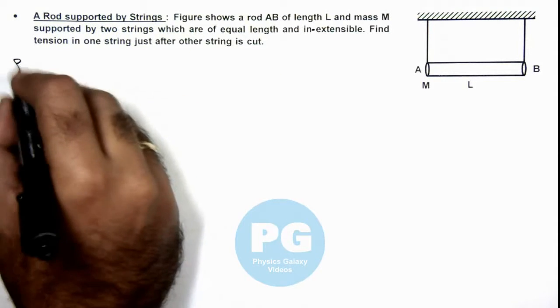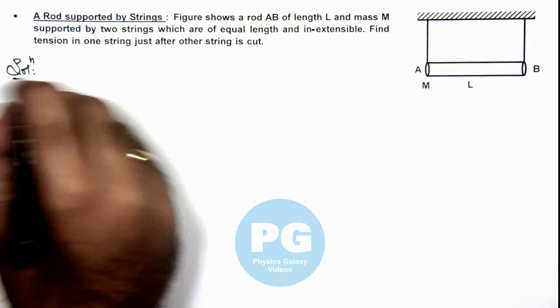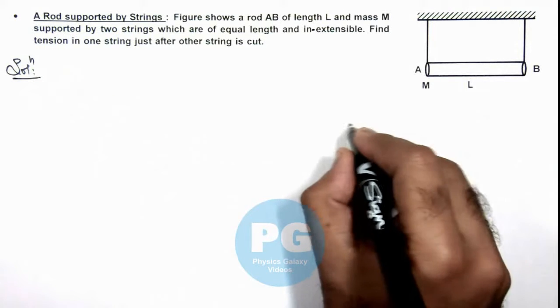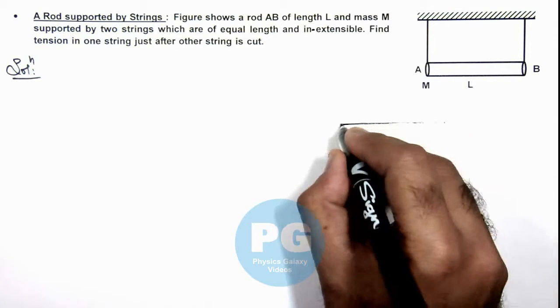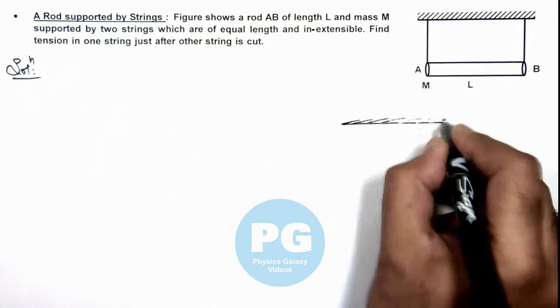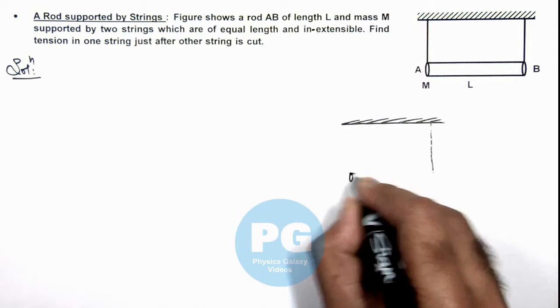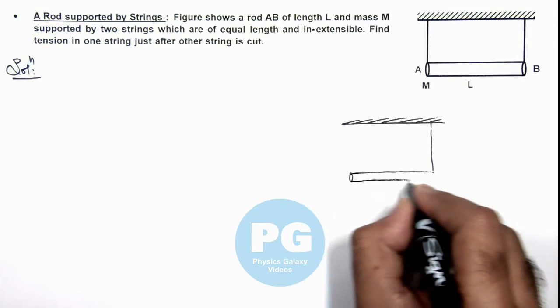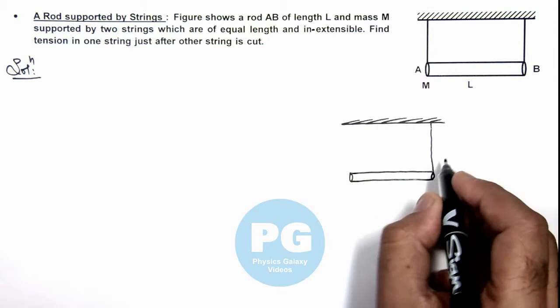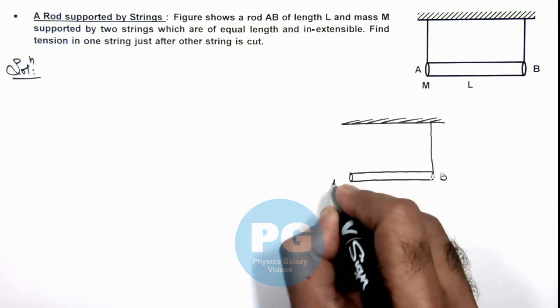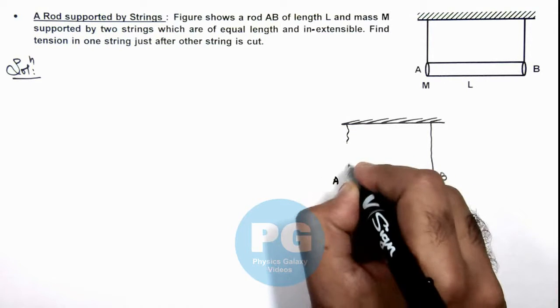In this situation we can analyze when one string is cut, the situation would be like this. Say this is the rod, and this is only in the support of the string at end B, and the string at end A is snapped.